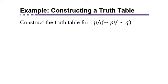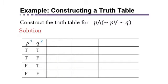Construct the truth table for P and parentheses, negation P or negation Q. So this is a much more complicated statement, but it still only has two component statements, P and Q. The first two columns are going to look exactly the same as before, but we just have to figure out the headings now.